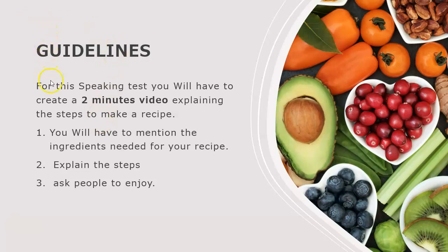So look at the guidelines. For this speaking test you will have to create a two-minute video explaining the steps to make a recipe. First, you have to mention the ingredients needed in the recipe — what are the elements, for example the vegetables, the quantities, the protein, and different elements related to the recipe.